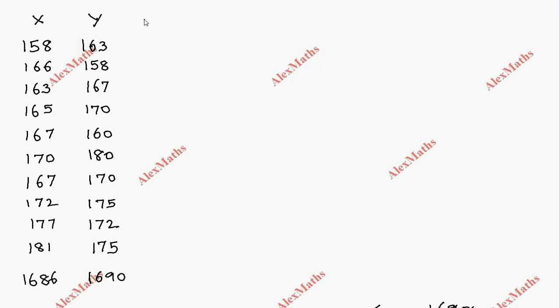Now I'll choose an assumed mean roughly in the middle of the data. Looking at the values, 170 is roughly in the middle. So I'll use 170 as the assumed mean. Now I'll calculate dx equals x minus 170, and dy equals y minus 170.